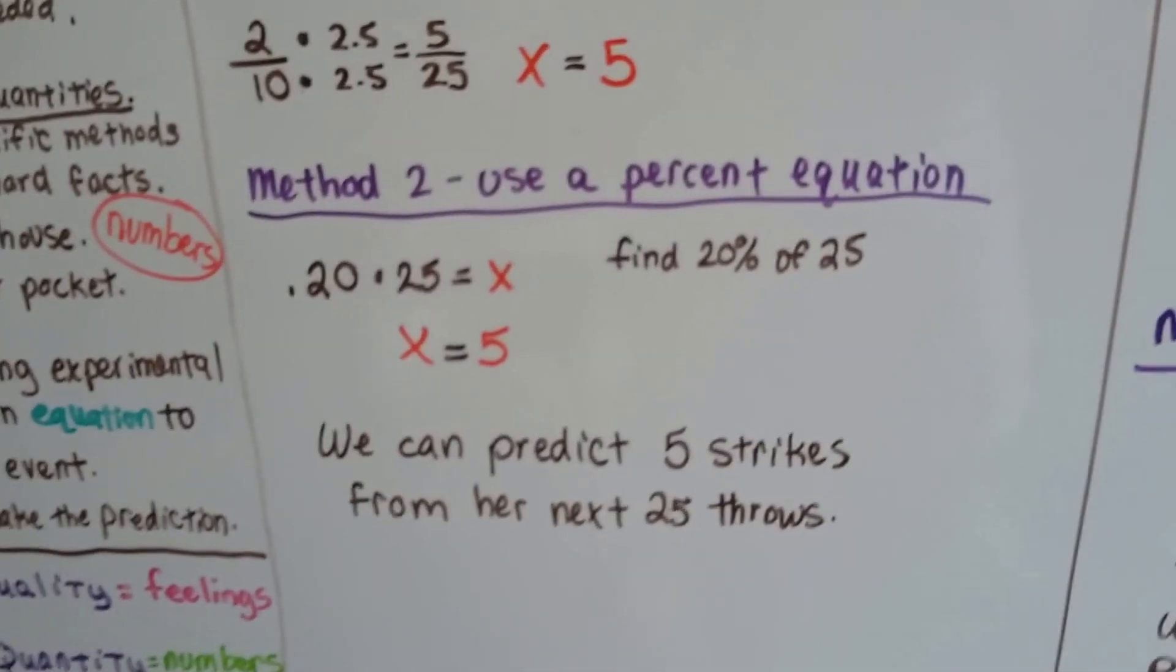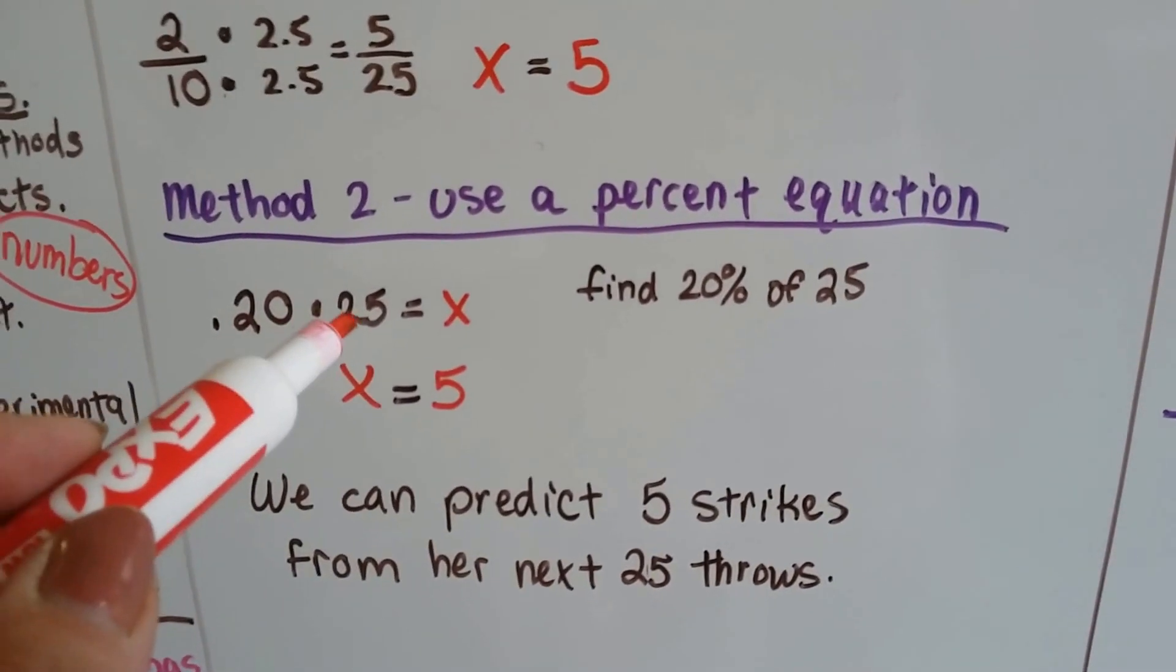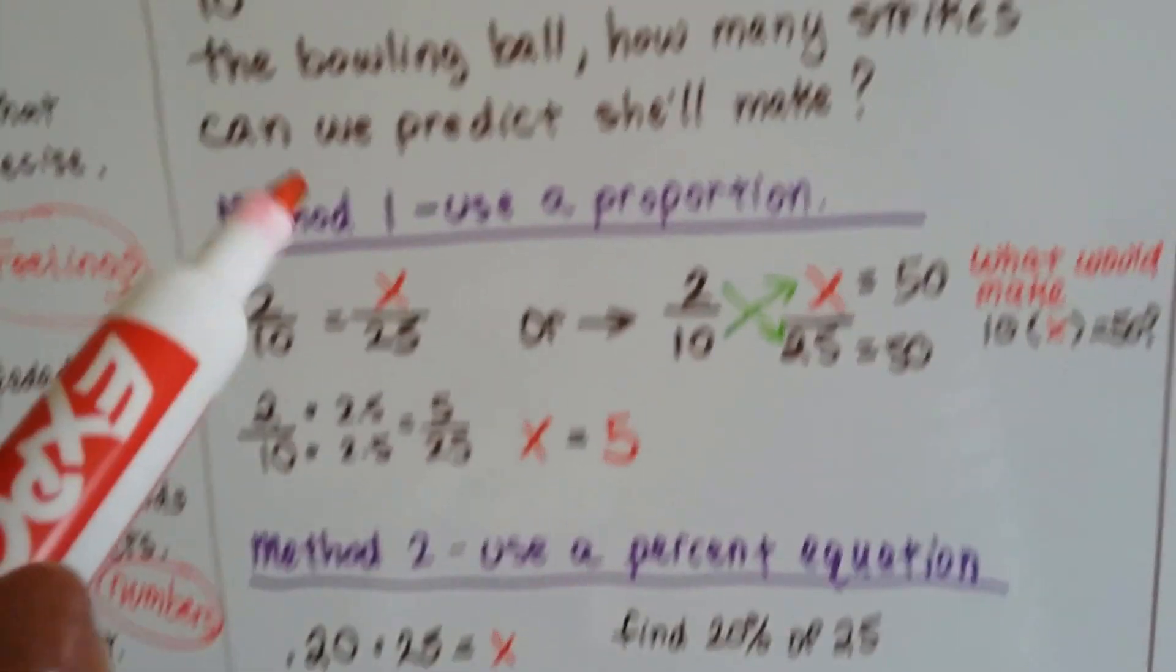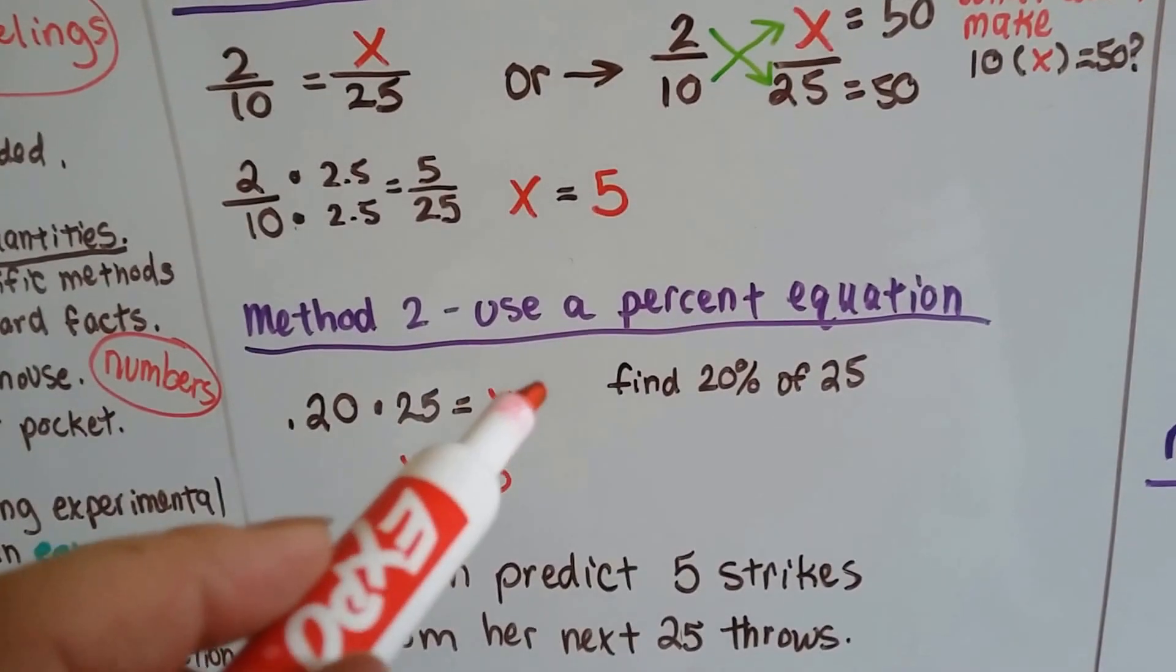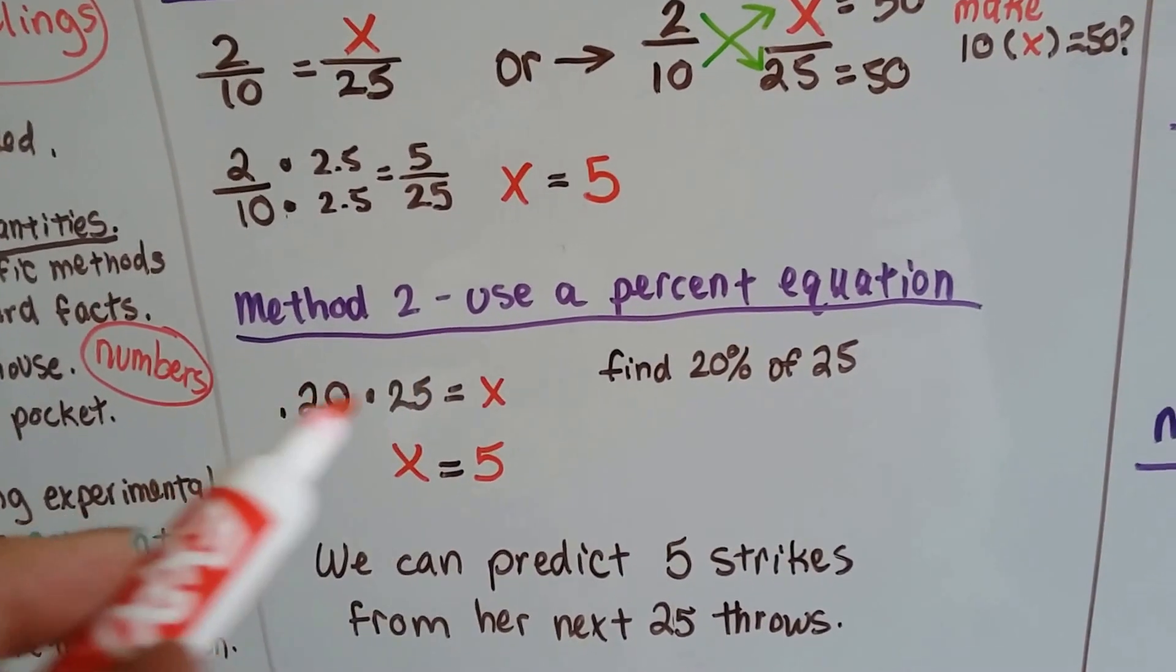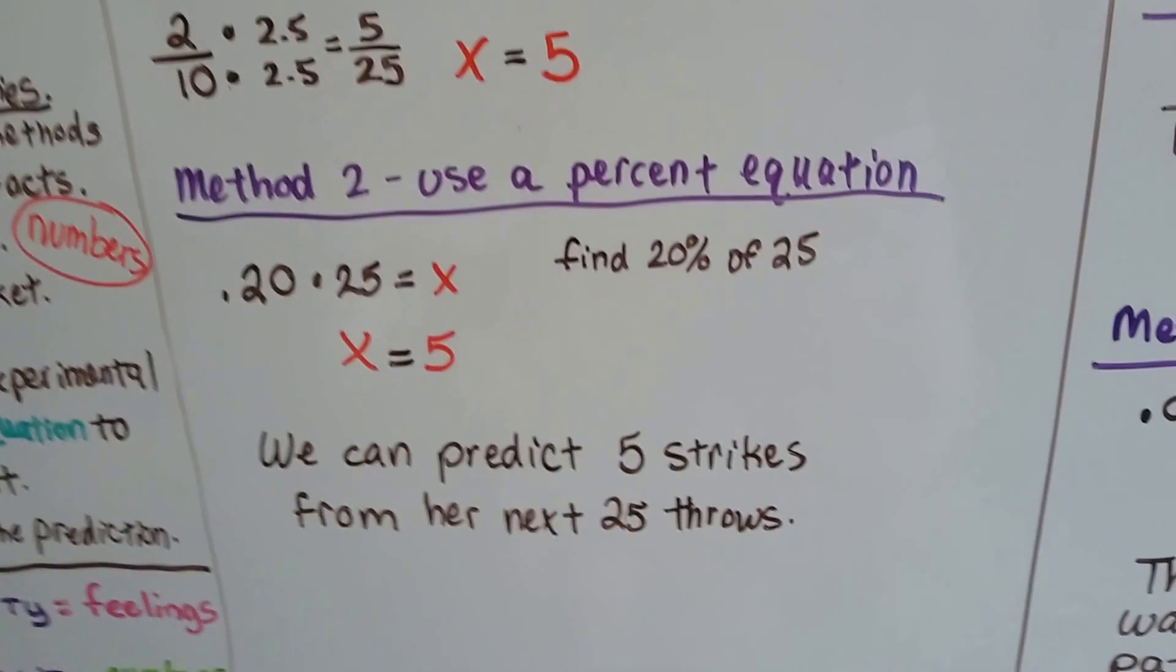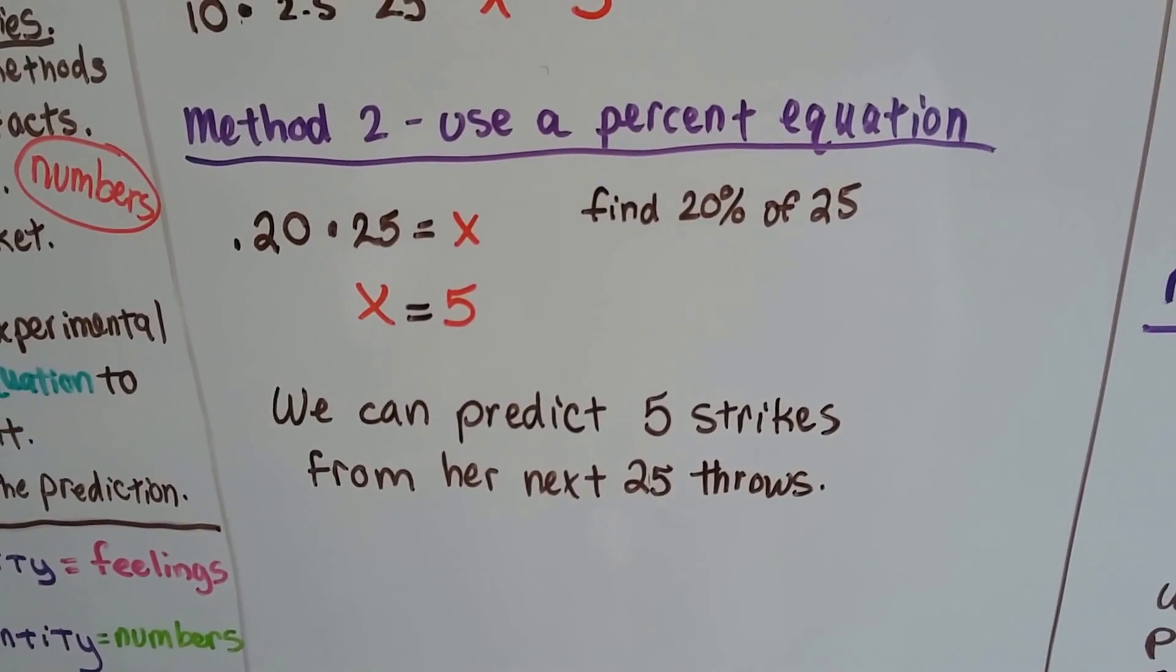Now method two would be to use a percent equation. 0.20 times 25 equals x. Because we know 2 tenths is 20%, 0.20 times 25 equals x. We would do this equation and come up with 5. We find 20% of 25. We could predict 5 strikes for her next 25 throws.